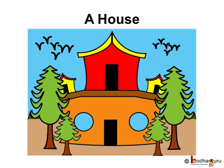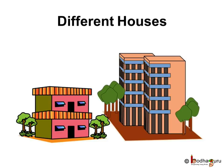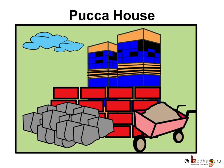When you visit your friends, relatives or neighbours, do you find that they have the same type of houses as you have? No, people live in different houses. Houses can be of different shapes, sizes and can also be made up of different materials.